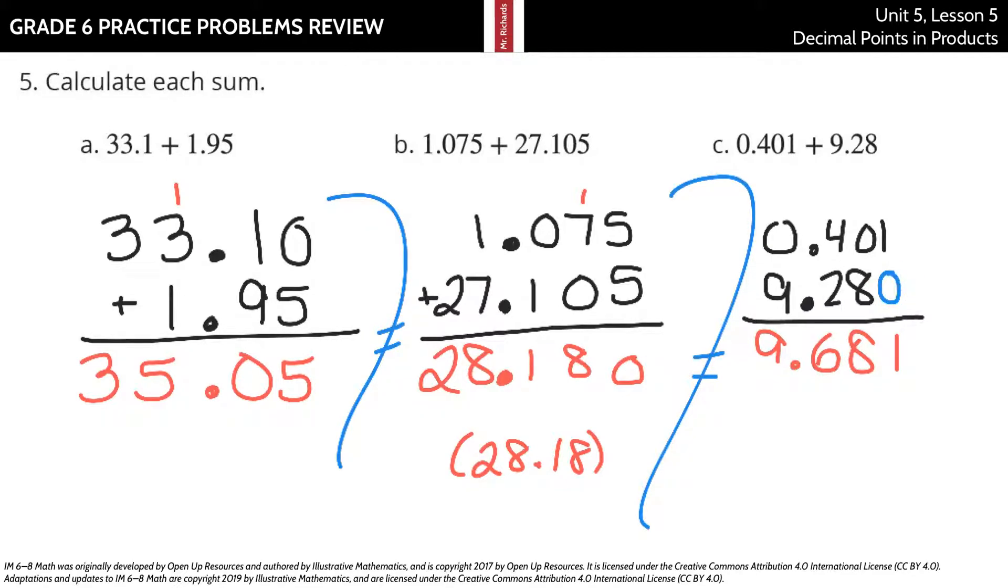And then I'd like to write the zero in as a placeholder here, but you have one plus zero is one. Zero plus eight is eight. Four plus two is six. Decimal point's down. Zero plus nine is nine.